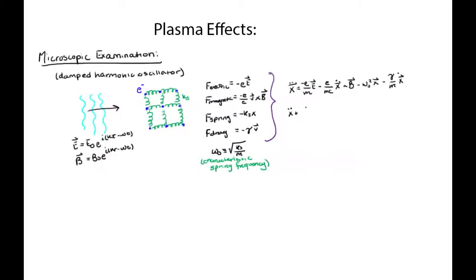So let's rearrange this to get all of the x terms on the same side. I apologize but I'm going to stop writing the little vector hats. To first order, we can cancel the magnetic term because we should expect the electric force to dominate for reasonable energies.